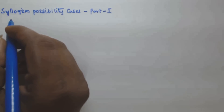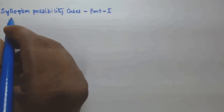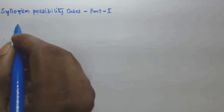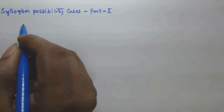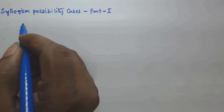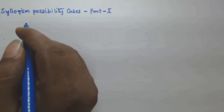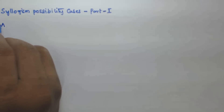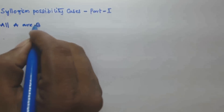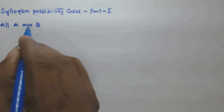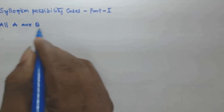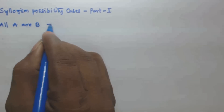Hello friends, welcome to the Score More Aptitude channel. In this video we will see the possibility cases of syllogisms. I will show you how to derive possibility conclusions based on the given statements. Let us assume the given statement is in the form of All A are B.